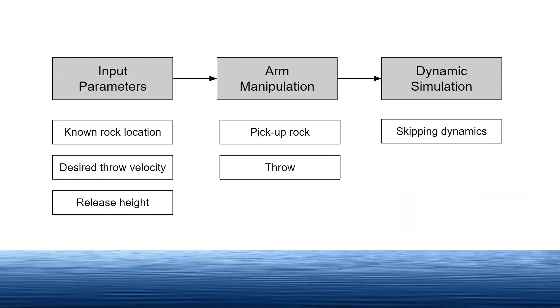Here is the general flow of our system where we specify parameters such as the known rock location, desired throw velocity, and release height. We then manipulate the arm to pick up the rock and throw it with the desired parameters. Lastly, we simulate the skipping dynamics.